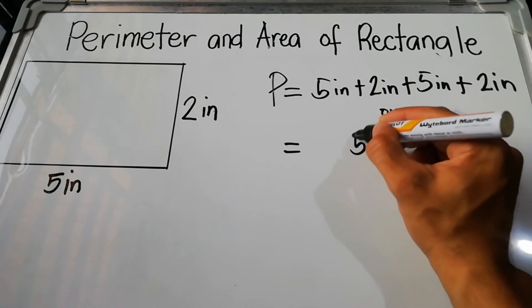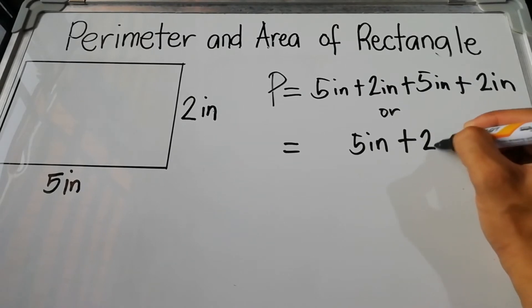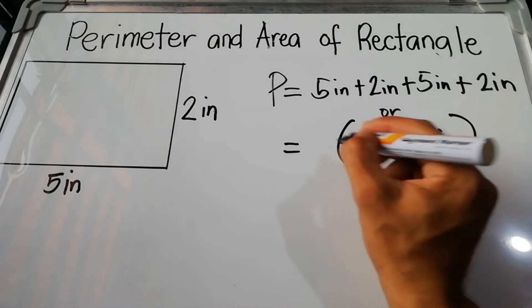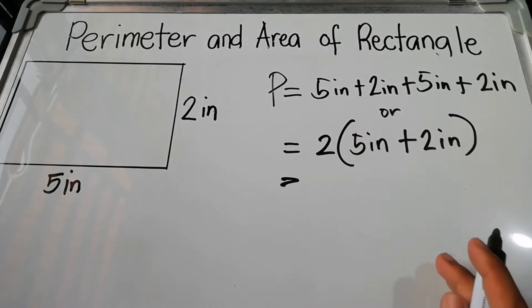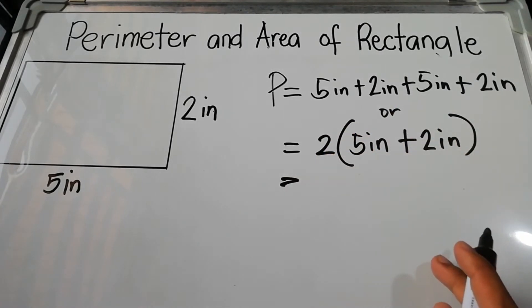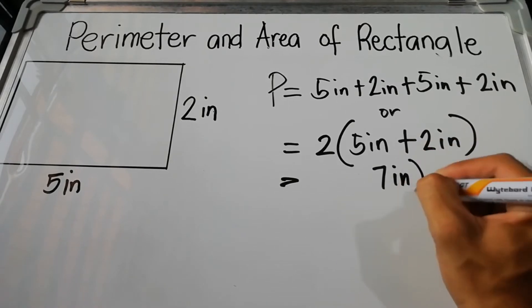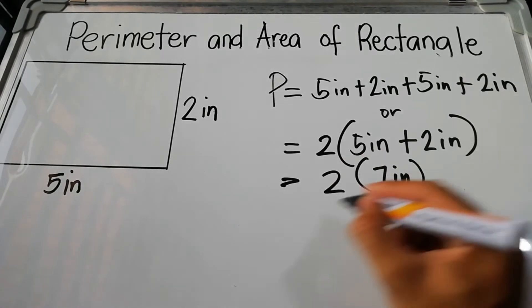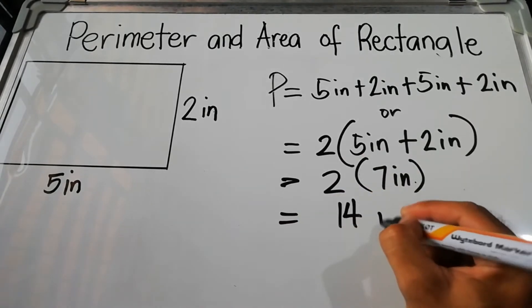Or use the simplest formula: add the length and width, then multiply by 2. Five plus 2 equals 7 inches, times 2 equals 14 inches.